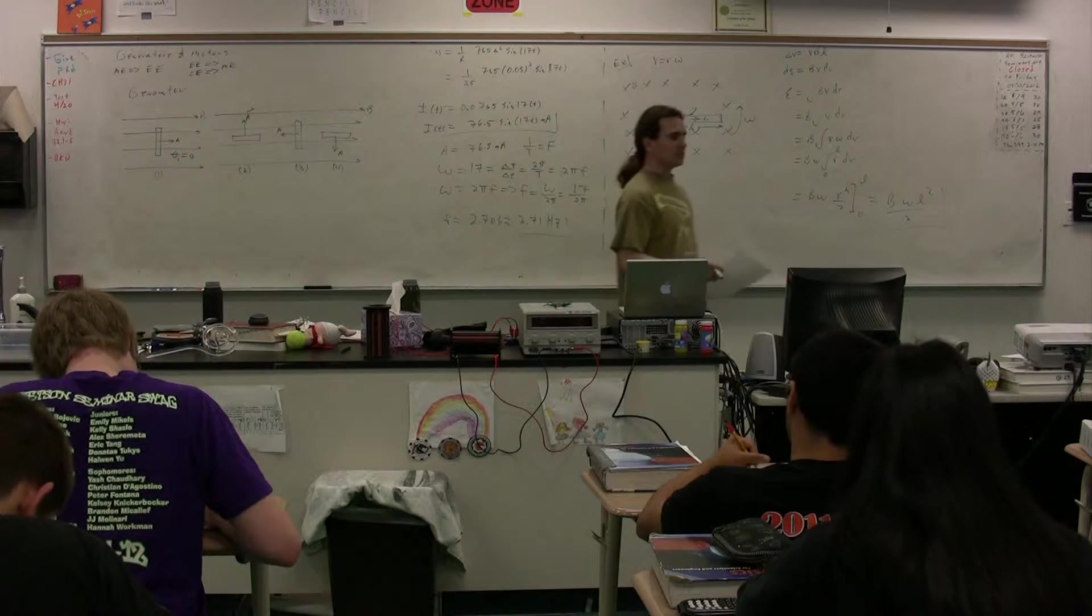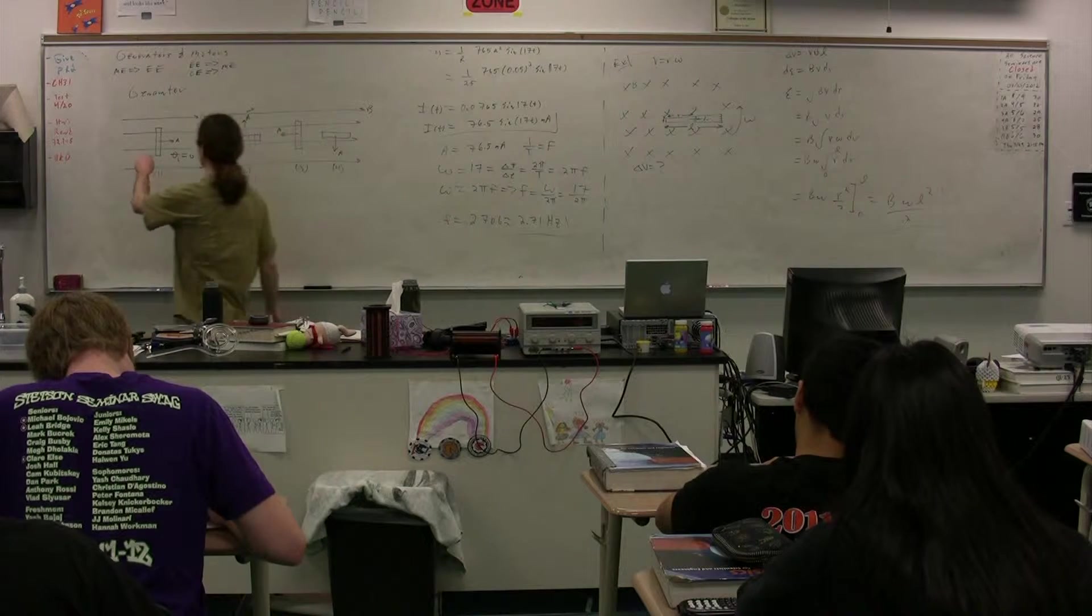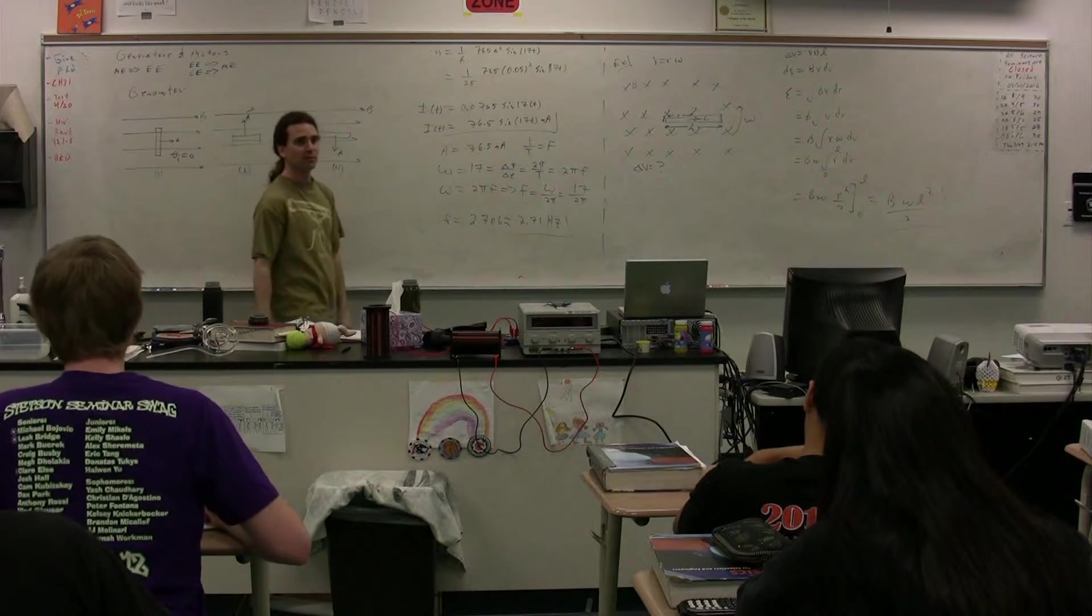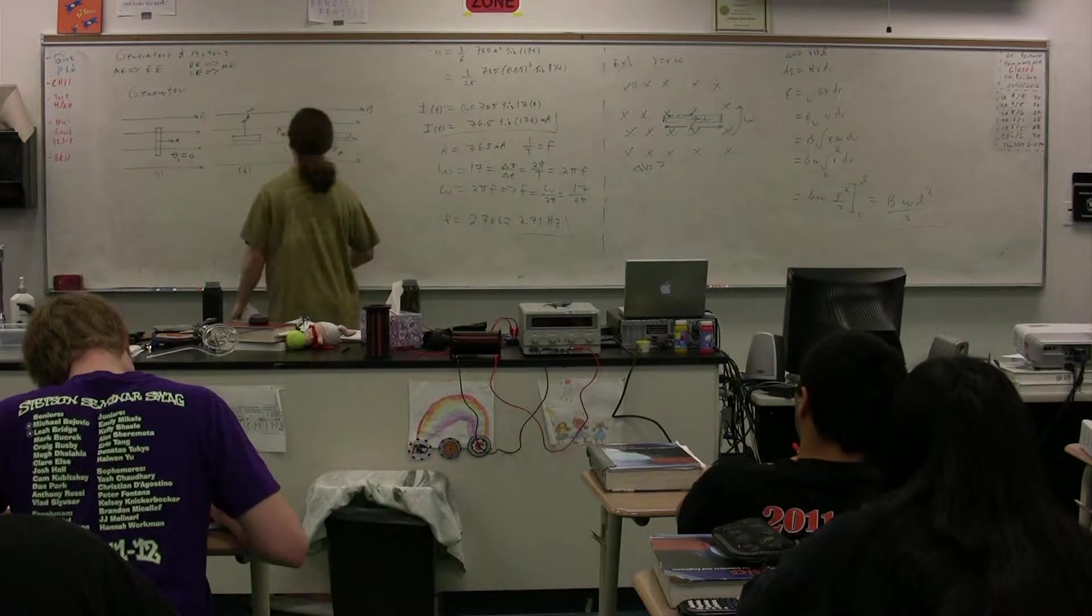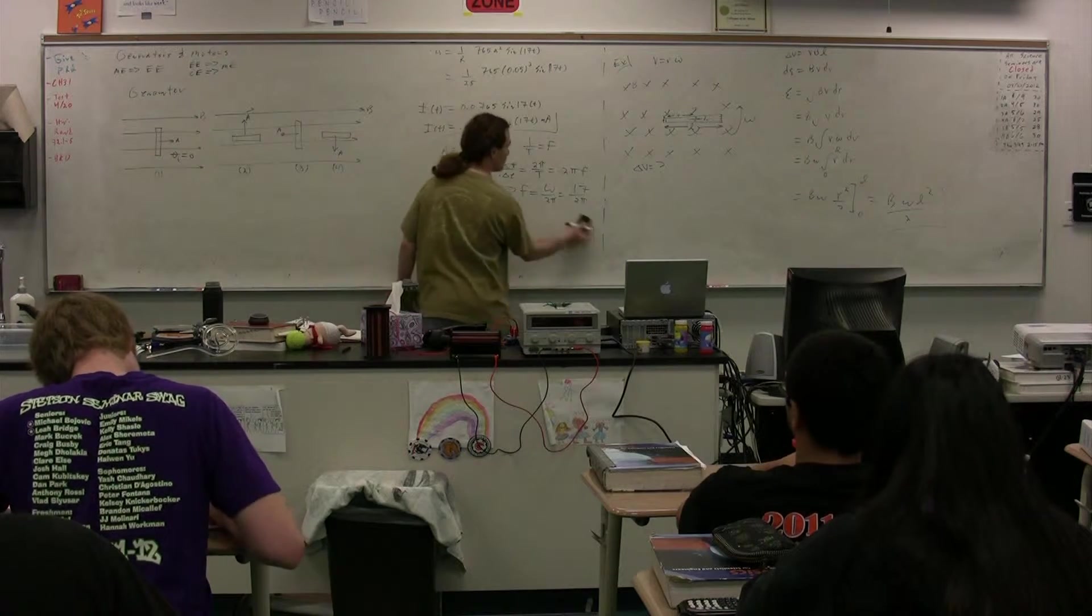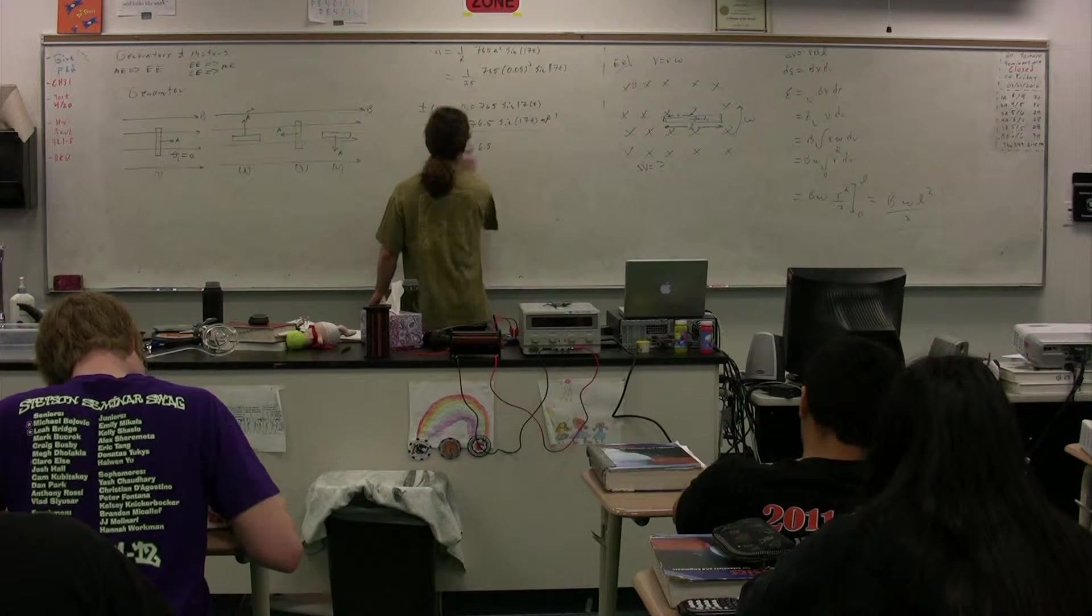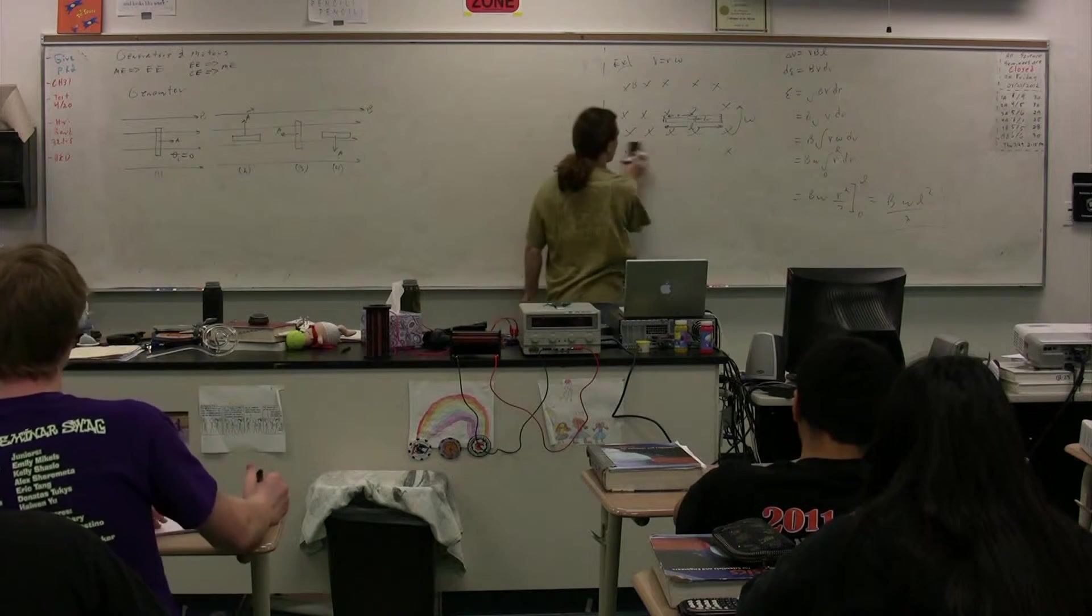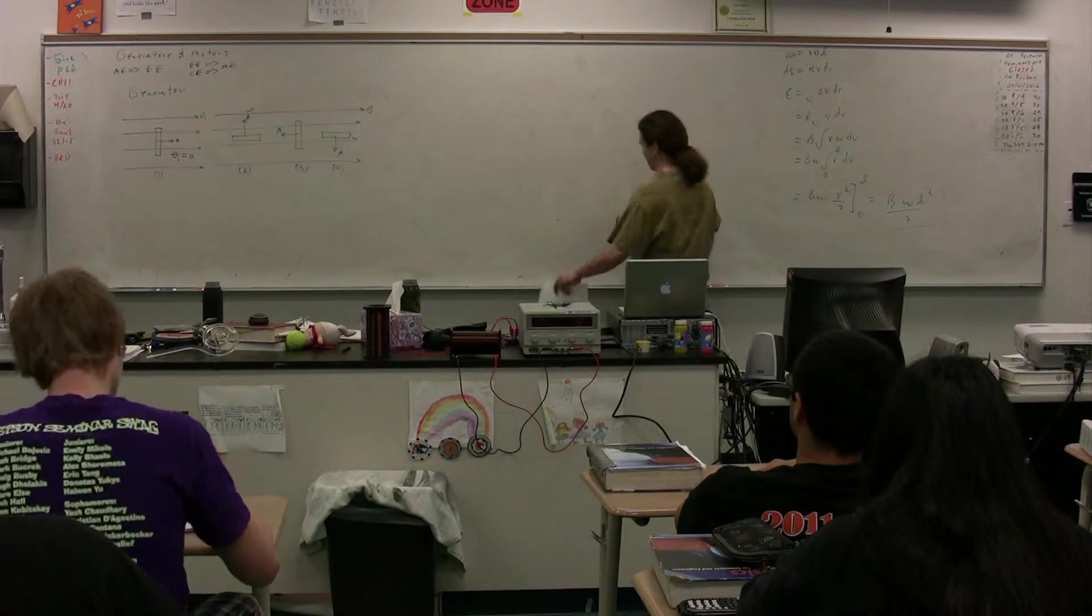And what this does is this changes the magnetic flux through this loop as a function of time, and therefore creates an EMF, or an induced current, in our loop. So what we're doing is we're taking and turning this loop via some sort of mechanical means, and therefore creating an electric current. The whole idea, a generator, converting mechanical energy into electrical energy.